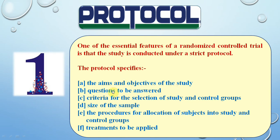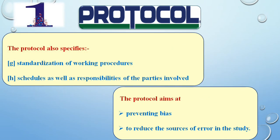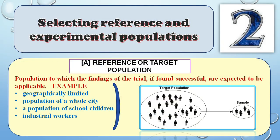The protocol step requires writing the aims and objectives, the questions to be addressed, the criteria for participant selection, the sample size, and the procedures for allocating subjects into two groups, the treatment being applied, and how it is applied. Writing a proper protocol helps prevent bias — which is a systematic error — and reduces errors in the study.